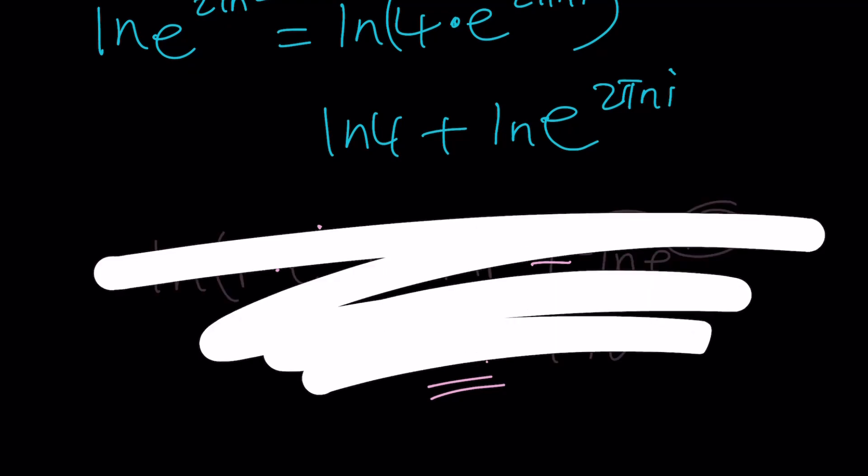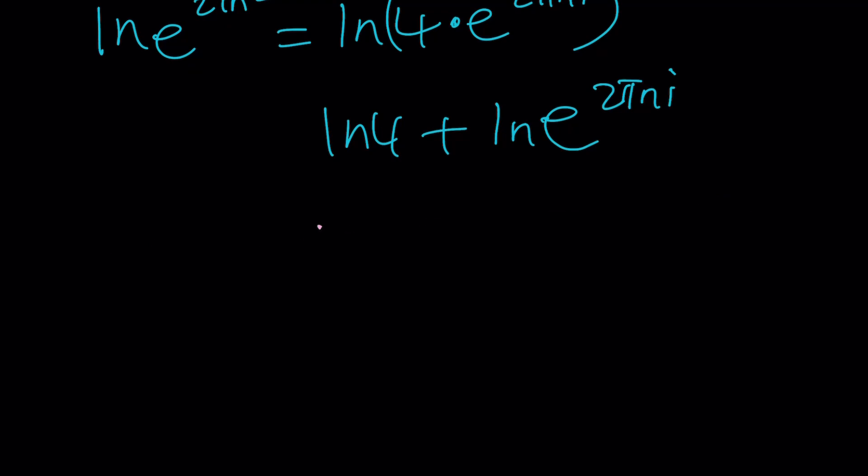Alright, cool. Let's go ahead and simplify it that way. And from the left hand side, we get this number. We can bring that to the front as z ln 2. And then this is going to become 2 pi n i. So z ln 2 equals ln 4 plus 2 pi n i. Awesome.